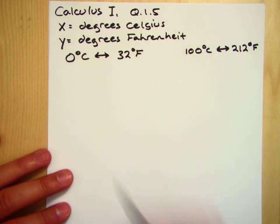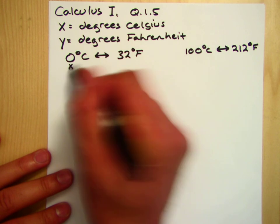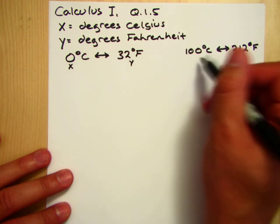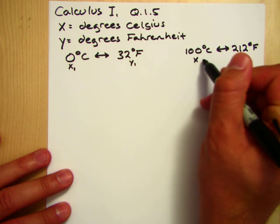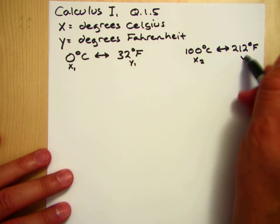Well, these are points on a line. If Celsius is x and Fahrenheit is y, that's our first point, and that's our second point.